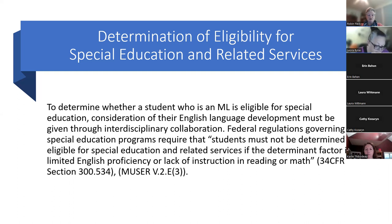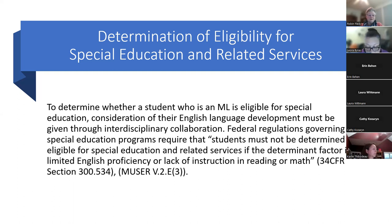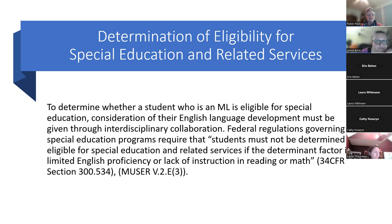Particularly for our older students who are SLIFE — students with limited or interrupted formal education — there is a tendency to think they might be special education students when in fact they've simply had no opportunity for any prior education, or very sporadic schooling. All the previously discussed variables are so important, but this is an even bigger issue with older students.